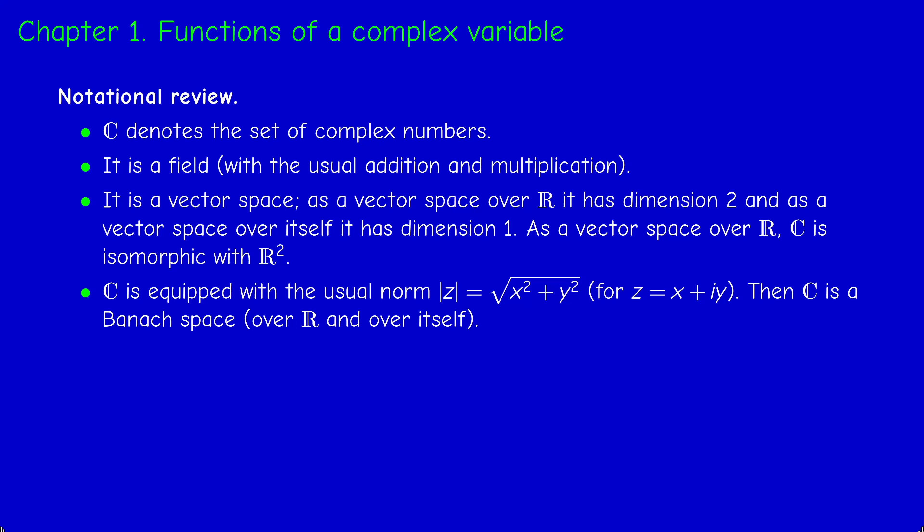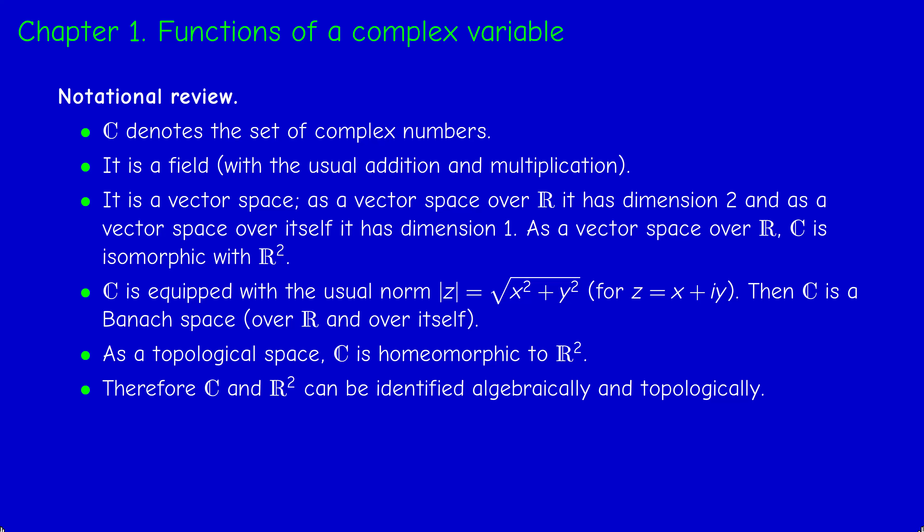Equipped with this norm, C is a Banach space. As a Banach space, it is also isomorphic — there is a topological isomorphism between C and R². So we can identify C with the plane R², which can be represented as a plane. We talk about the complex plane. Algebraically and topologically, C and R² are the same, which is why we identify them.